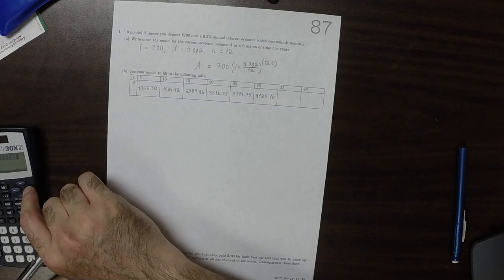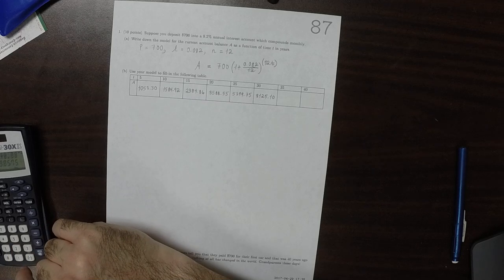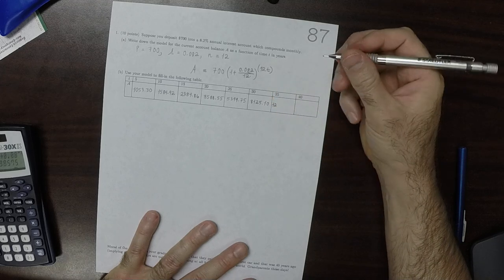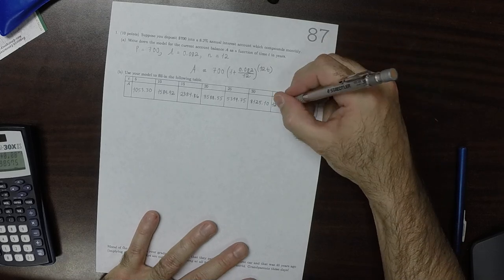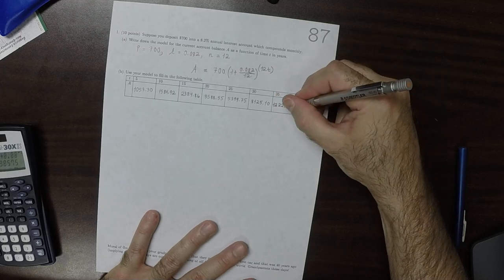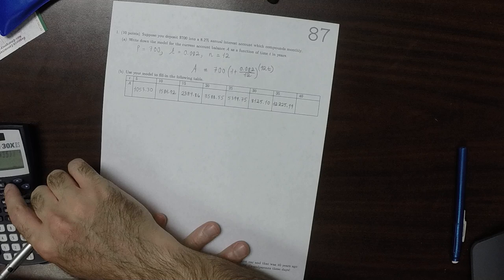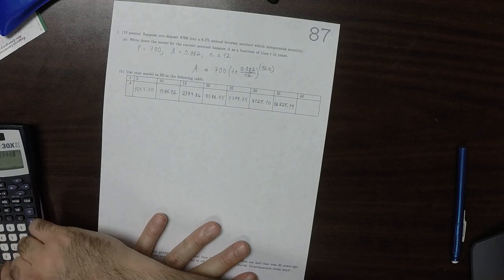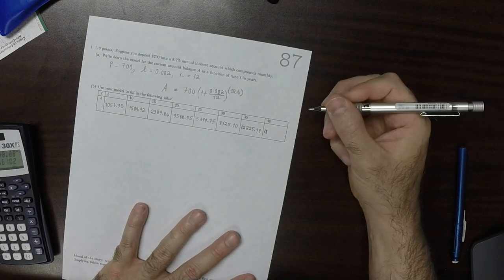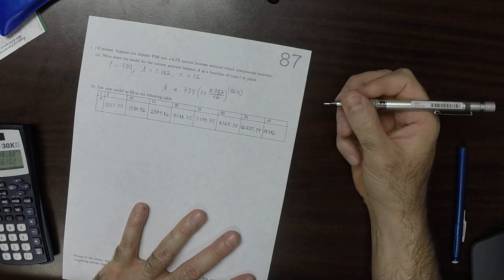35 years, 12,225.99, and then plug in 40, and you get 18,396.66.